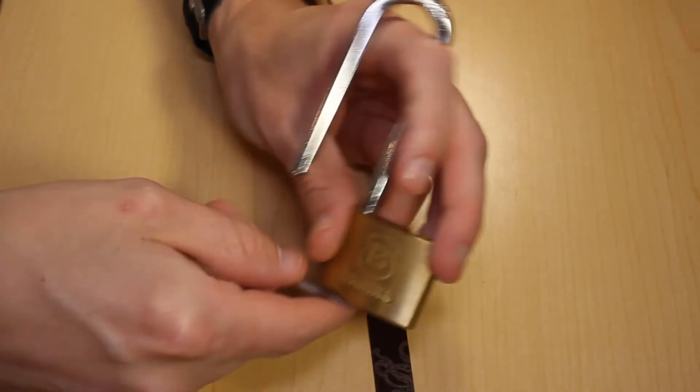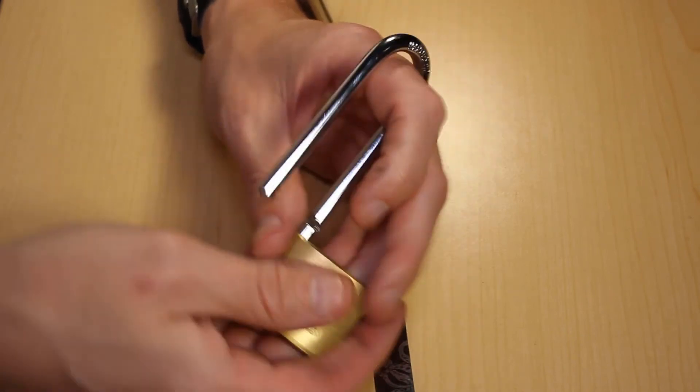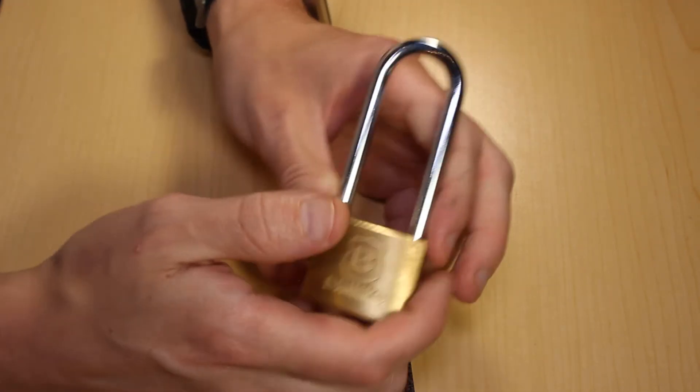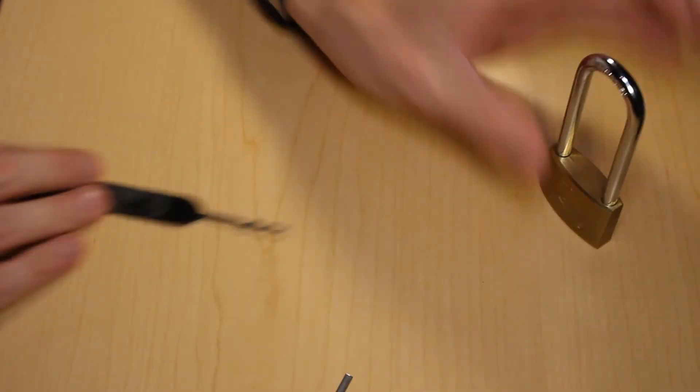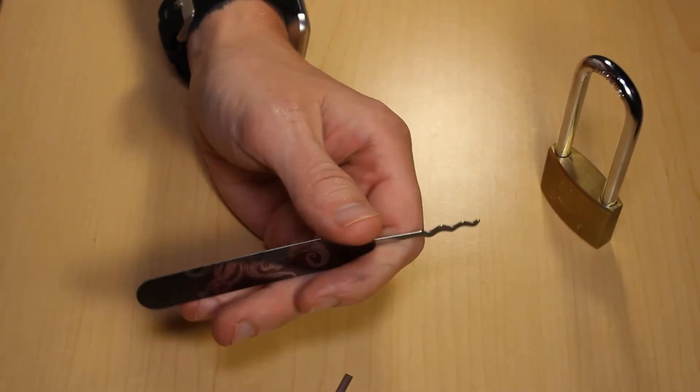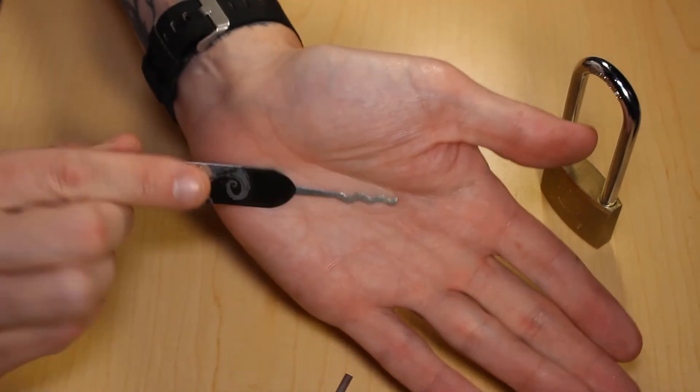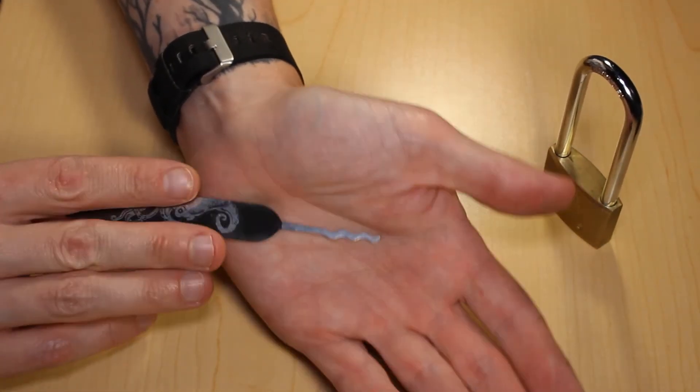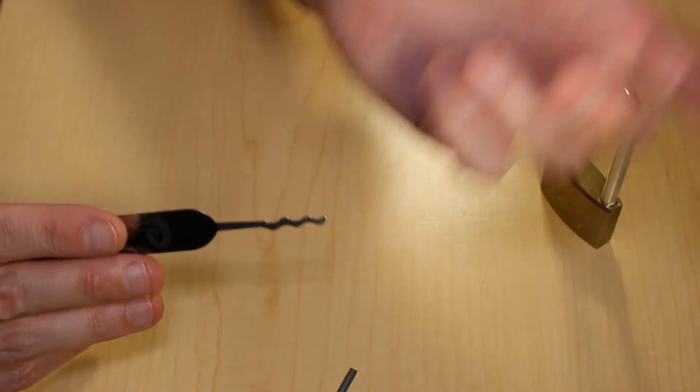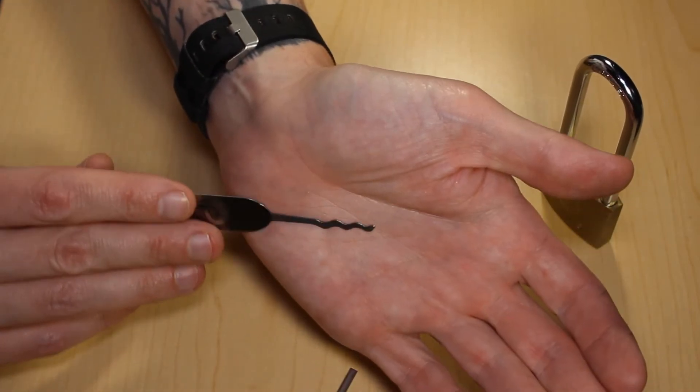So we were able to get this lock open and it does open quite a few locks. You'd be surprised. I don't like the octo rake quite as much as I like my worm rake. I'm pretty loyal to my worm. I may have another video on the worm rake and I really like it a lot.